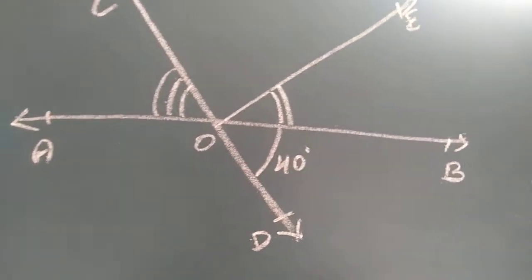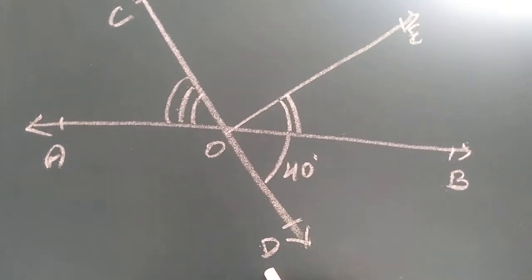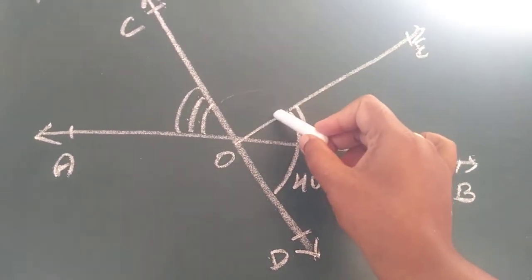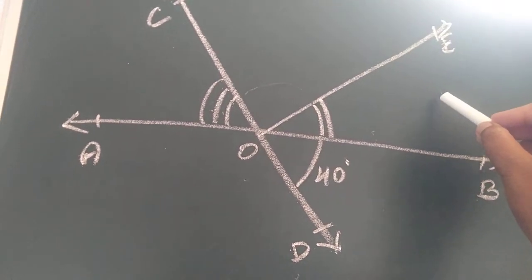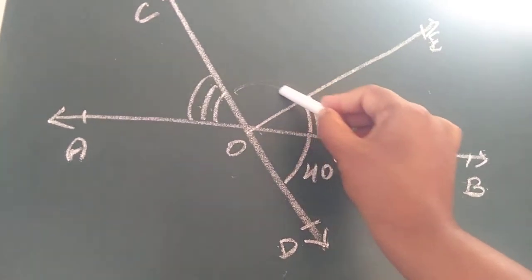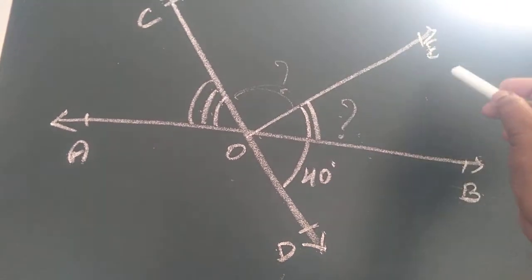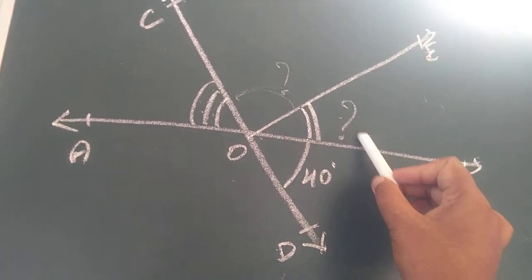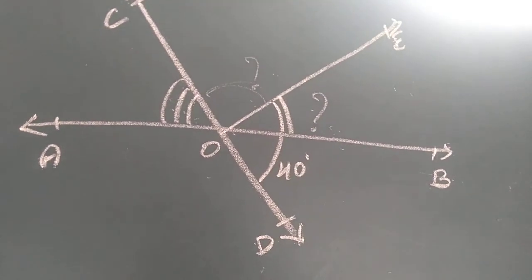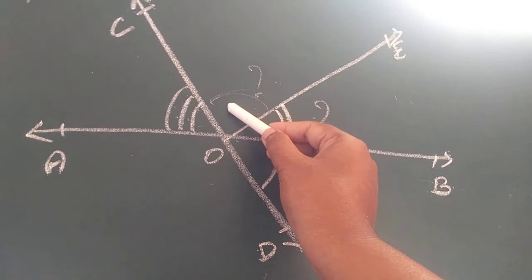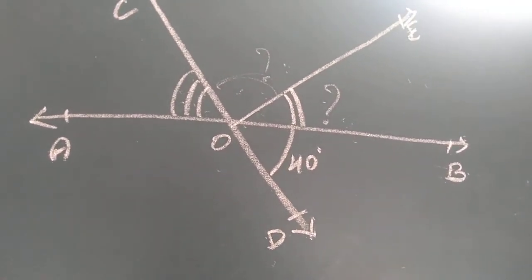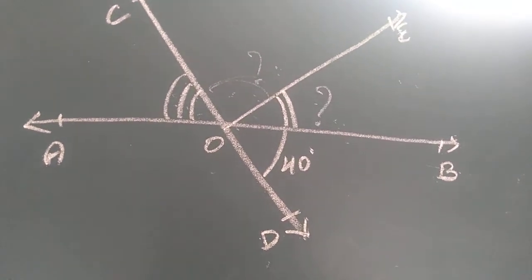This is the figure according to the question. They have given angle BOD as 40 degrees and the sum of two angles as 70 degrees. You have to find the reflex of angle COE and angle BOE. Since these three angles form a linear pair, their sum is 180 degrees. Subtracting 70 from 180 gives 110 degrees, and the reflex of COE means subtracting 110 degrees from 360 degrees.